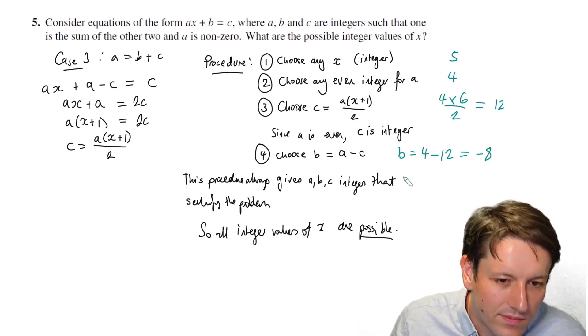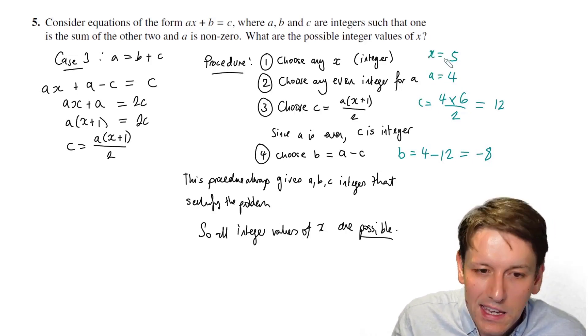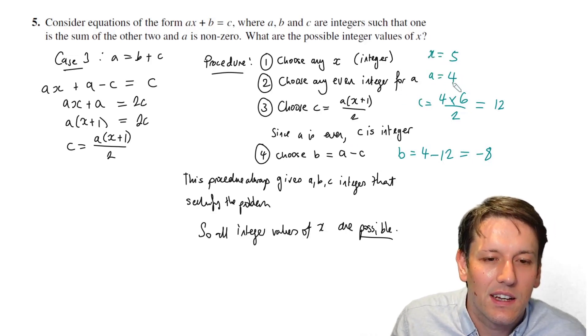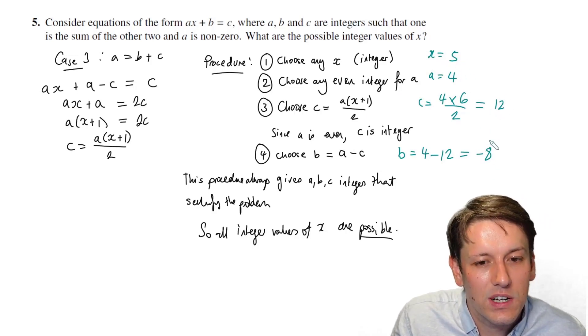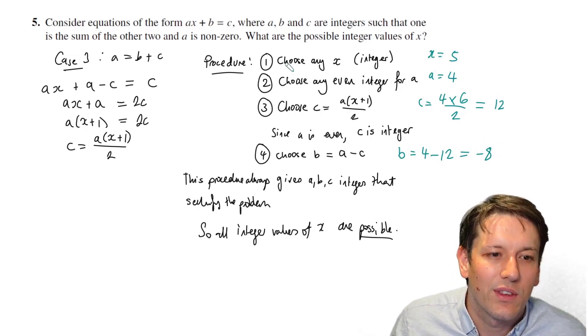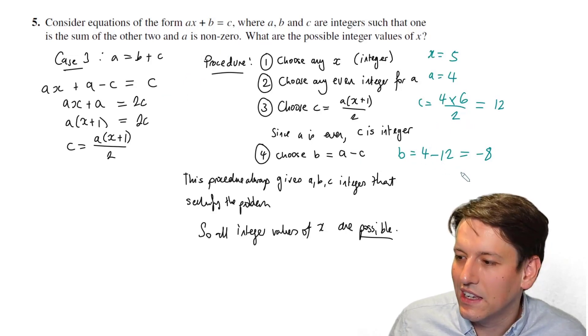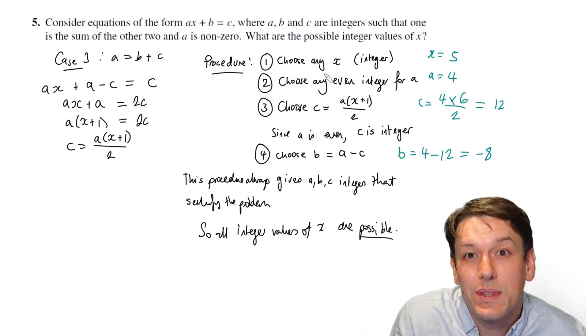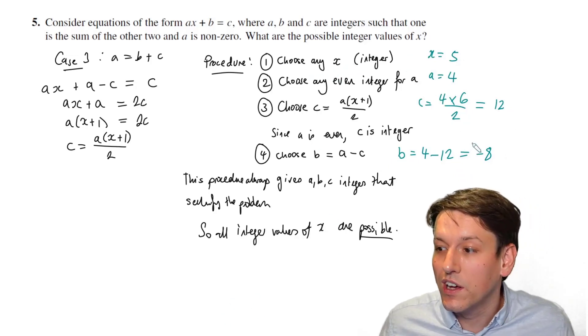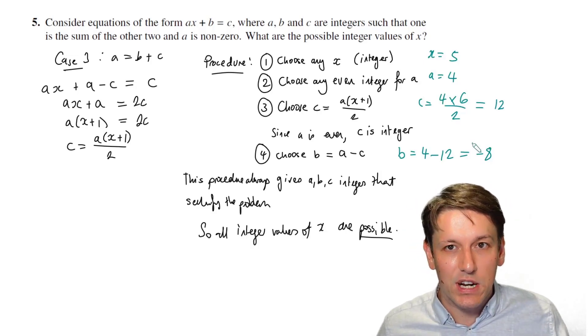So for this combination, we've got this is c, this is a, and this is x. We do have a times x plus b, which is 20 minus 8 equals 12. So ax plus b is c, and also we know that a is equal to b plus c, because we chose b to be exactly that. 4 is equal to 12 plus minus 8. And you could do this with any value of x, and it would always work. So this procedure shows us that it's always possible to get an answer for any value of x.